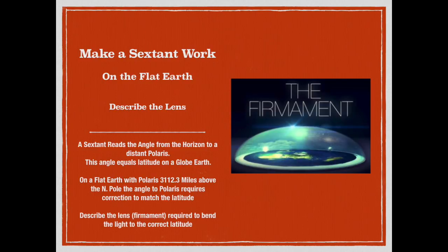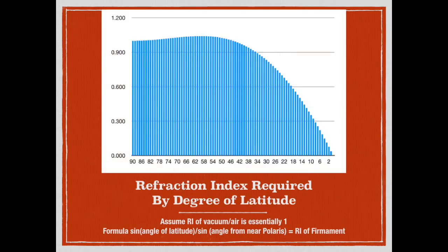I've calculated this difference on a spreadsheet — you can find the link in the description — by degree of latitude from the North Pole at 90 north all the way down to the equator. The height of Polaris is determined by looking at the angle at 45 degrees north latitude, which is 45 degrees, and taking the distance from that degree of latitude to the North Pole. That distance must equal the height of Polaris on a flat Earth, which is 3,112.3 miles. Using that height, I calculated the angle of Polaris at every degree of latitude from 90 degrees north down to the equator.